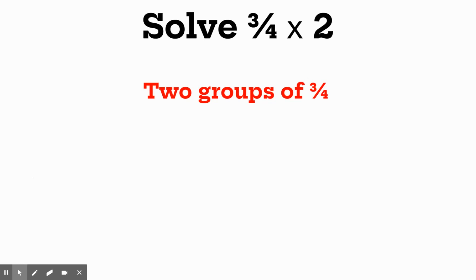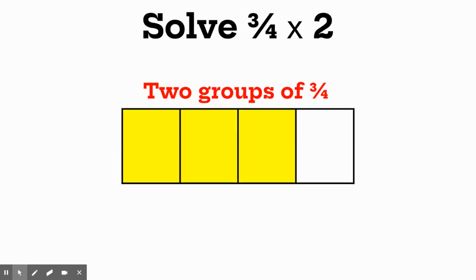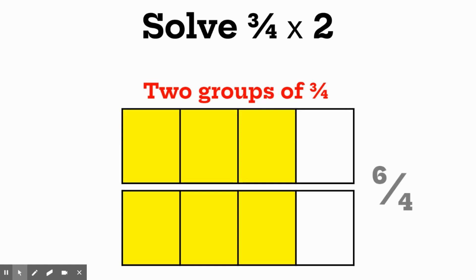Here's one group of three fourths, and then a second group of three fourths. If you count up all the fourths pieces that are shaded, you will get an answer of six fourths. So that's one way you can do three fourths times two — just draw it with a picture and count.